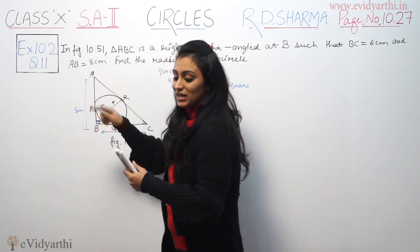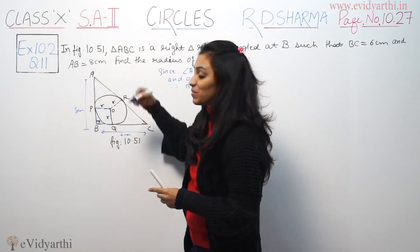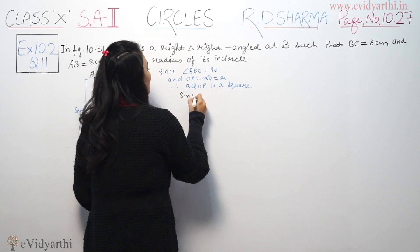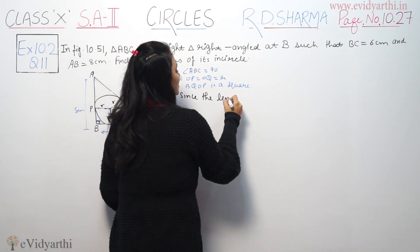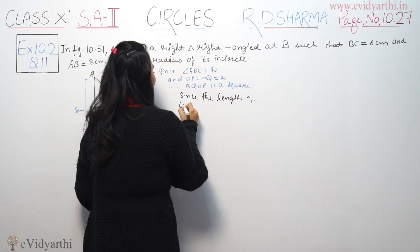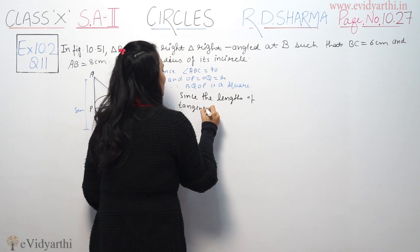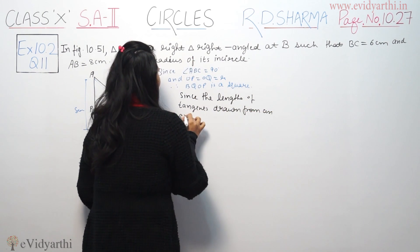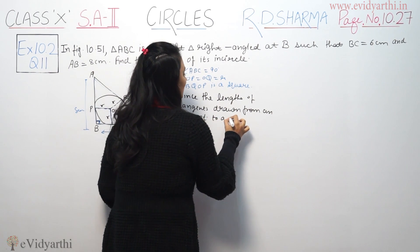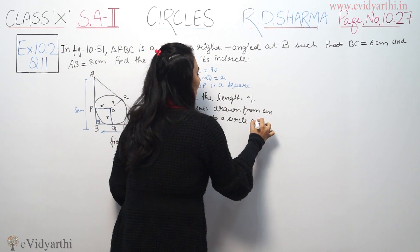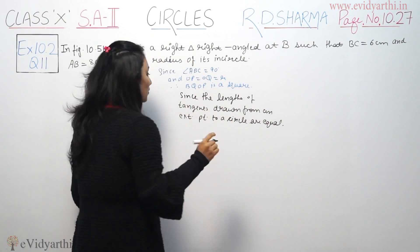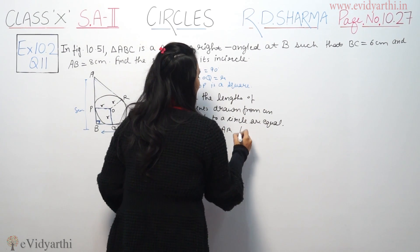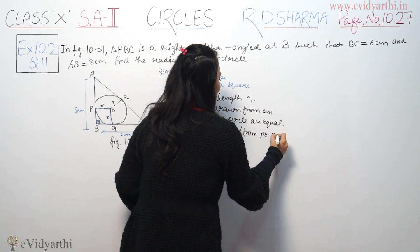A is an external point here. Tangents drawn from point A are AP and AR. Now, looking at AP, since the lengths of tangents drawn from an external point to a circle are equal, AP is equal to AR from point A.